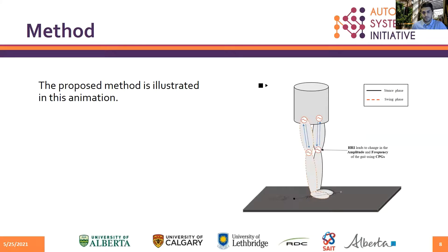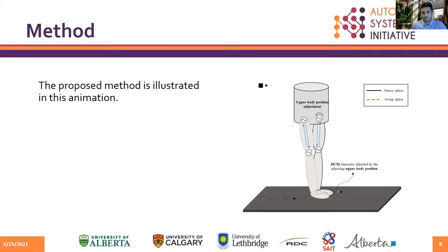The user applies resistive interaction torque and decreases the frequency of walking via the CPGs. Therefore, the desired DCM offset and the desired DCM at the end of the step will be changed. The upper body position adjustment is done with the exoskeleton to make sure that the DCM reaches the desired value at the end of the step.